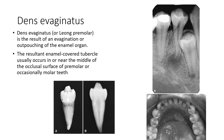Dens evaginatus, also called Leong's premolar, occurs as a result of evagination or outpouching — literally the opposite of dens in dente. Outpouching of the enamel organ results in an enamel-covered tubercle that usually occurs in or near the middle of the occlusal surface of a premolar or occasionally a molar. Many times this protruding tubercle gets worn down, resulting in the tooth becoming infected. You can see in image A that there is already periapical pathology in the tooth.